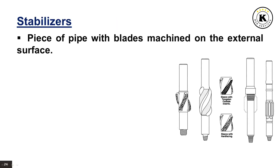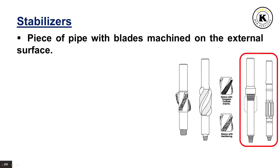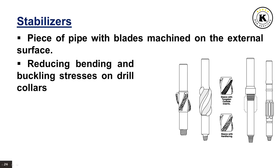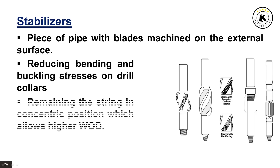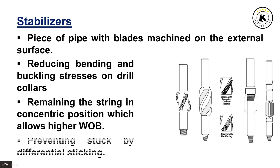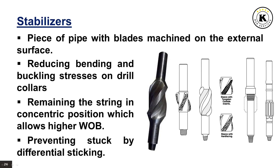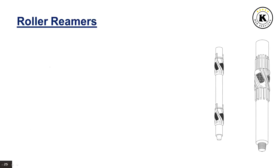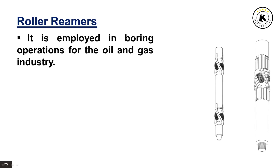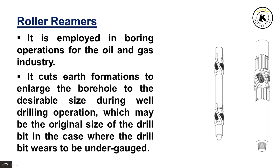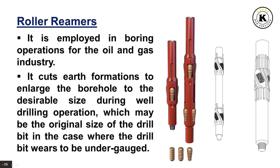Stabilizers are pieces of pipe with blades machined on the external surface. The blades can be spiral or straight — normally there are three blades. Their functions include reducing bending and buckling stresses on drill collars, keeping the string in a concentric position to allow higher weight on bit, and preventing stuck pipe by differential sticking. Roller reamers are employed in boring operations to cut earth formations and enlarge the borehole to the desirable size, particularly when the drill bit wears to be undergauged.